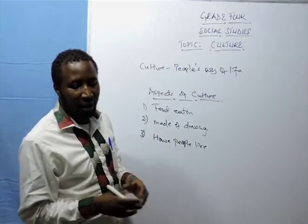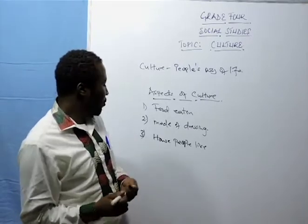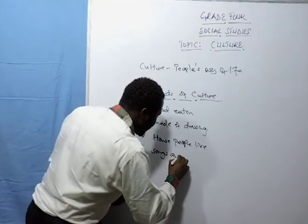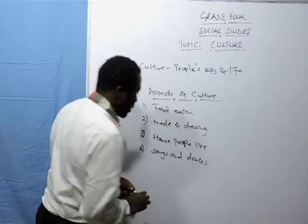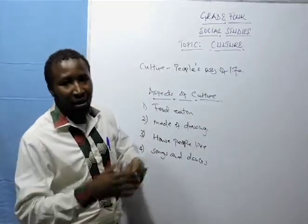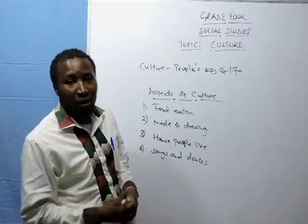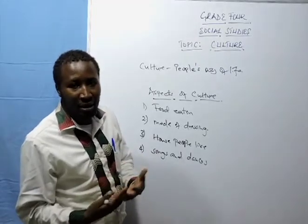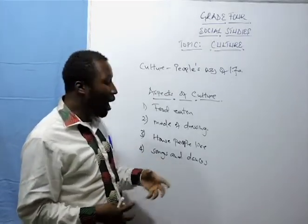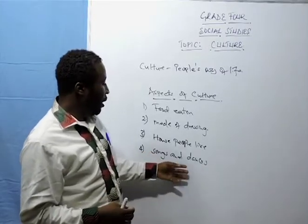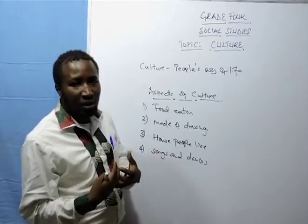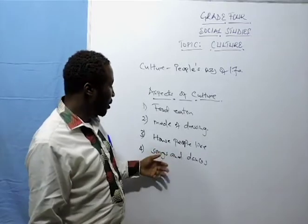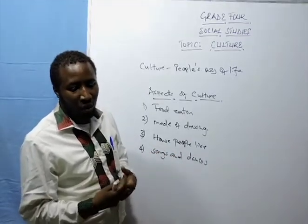Culture has various kinds of aspects. Number four, we have songs and dances. The kind of songs and dances that they sing — for example, the Kisii have what we call the Moboko dance. The Masai also have their dances, the Luhya have their dances, the Luo have their dances. The songs and dances are part of their culture. As they sing their traditional songs, it brings their culture together.